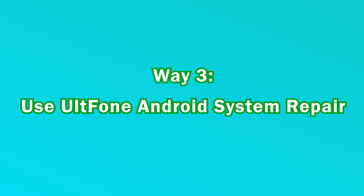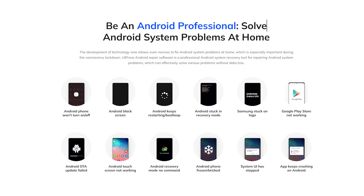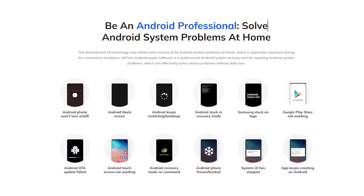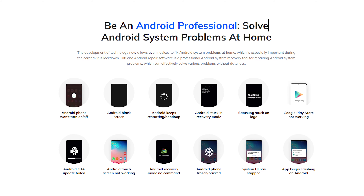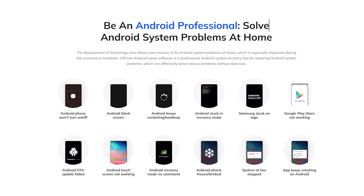Way 3: use Old Phone Android system repair. Old Phone Android system repair is one of the most recommended methods. This method works all the time without failing, and even repairs other Android system problems, including Android system crash, black screen, frozen or bricked phone, etc.